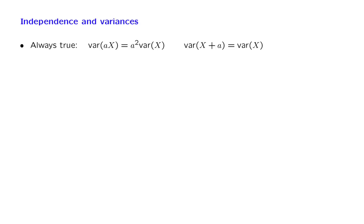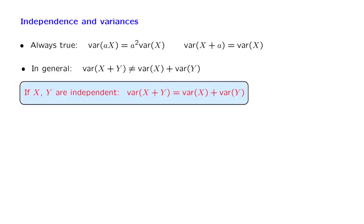Unfortunately, the situation is not so simple, and in general, the variance of the sum is not the same as the sum of the variances. We will see an example shortly. On the other hand, when X and Y are independent, the variance of the sum is equal to the sum of the variances. And this is a very useful fact.